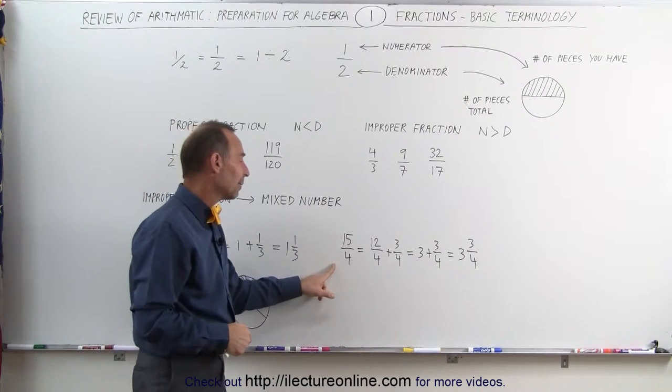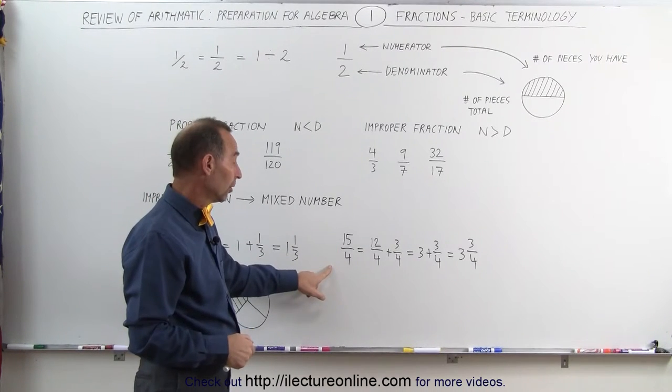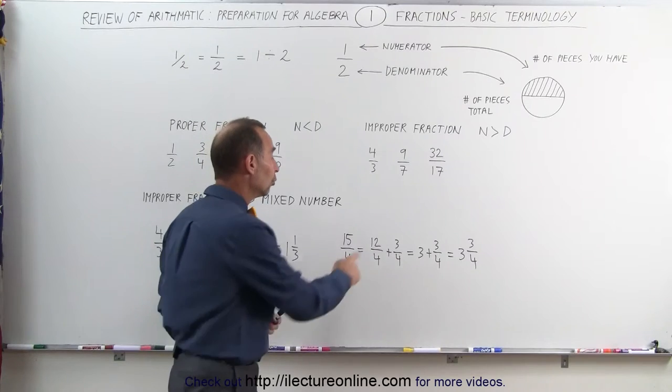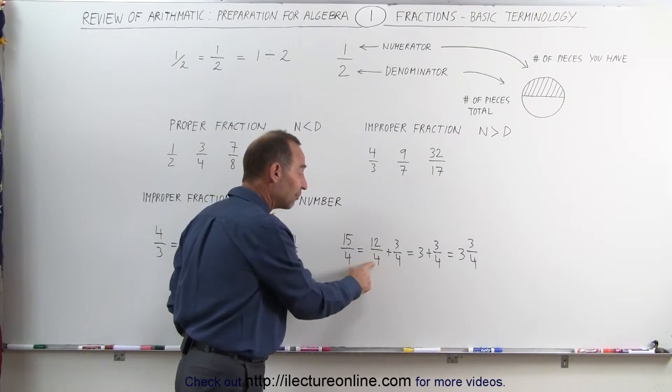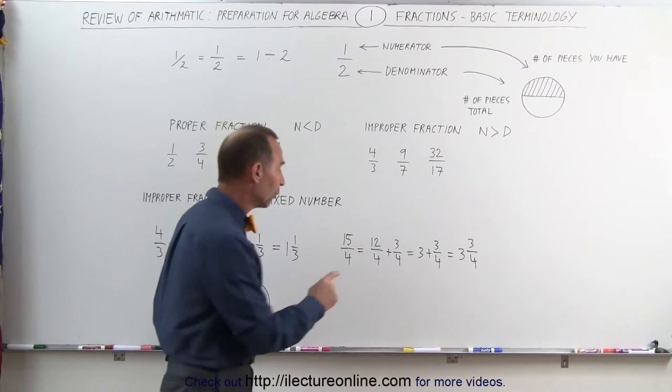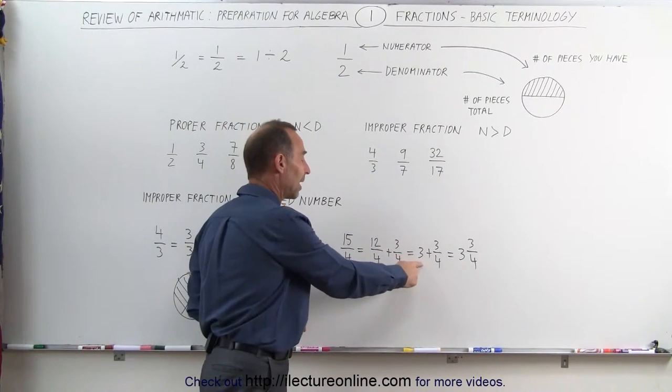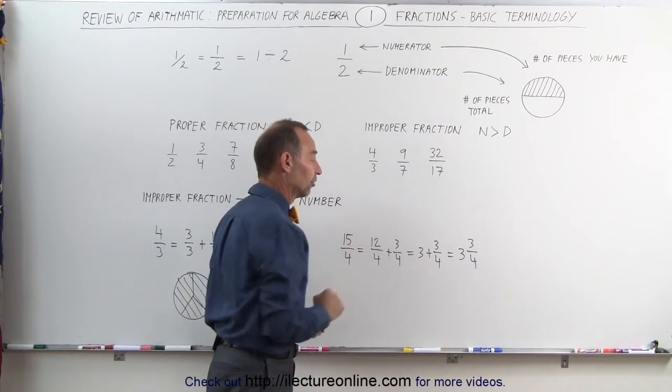Same with the number 15 divided by 4, or 15 fourths. You can write as 12 fourths plus 3 fourths. Again, 12 plus 3 is 15, but notice that 12 can be divided by 4 just evenly. 4 goes into 12 exactly 3 times, so this can be written as 3 plus 3 fourths.